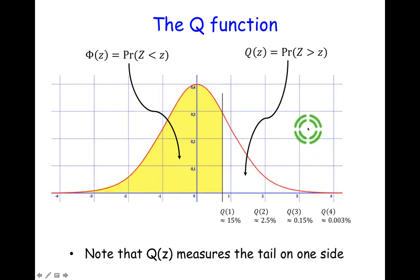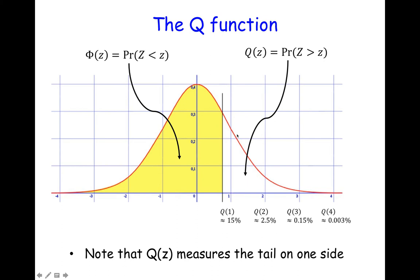This is a teaser for the next videos. Using the assumption that the distribution is normal, we can ask what is the probability of falling some distance from the mean. We have the normal distribution and we define Q1 as the probability that the random variable exceeds the mean by one standard deviation, Q2 for two standard deviations, Q3 for three, Q4 for four. At four standard deviations, the probability of exceeding that distance under a normal distribution is extremely small.